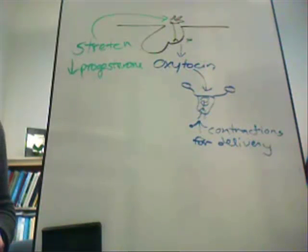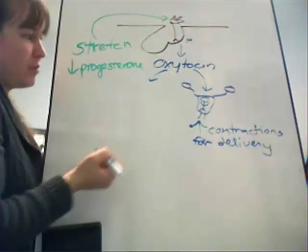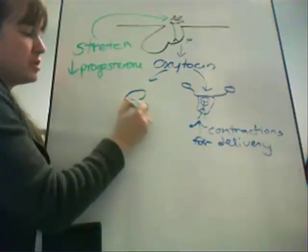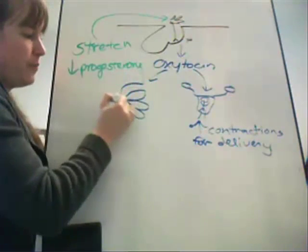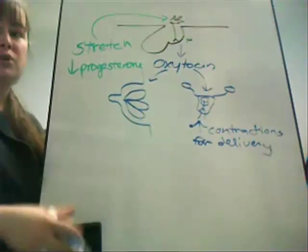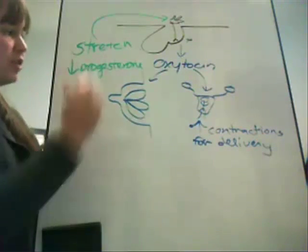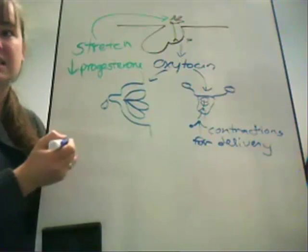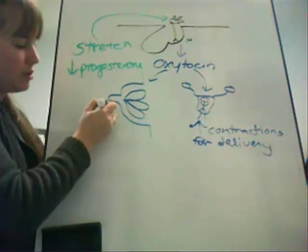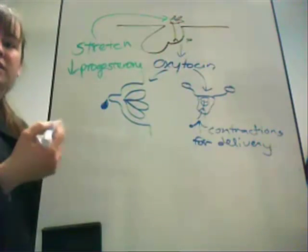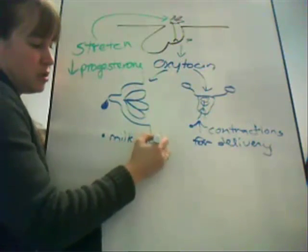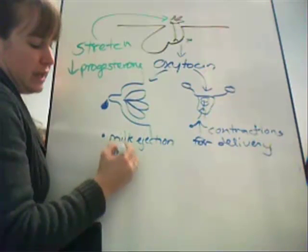Oxytocin is also important in the months post-delivery because it has an effect on breast tissue. Prolactin is produced by glands inside the breast tissue and produces the milk, but prolactin cannot get the milk out. Oxytocin targets the milk glands and causes the breast to start releasing milk — making oxytocin important in milk ejection during lactation.